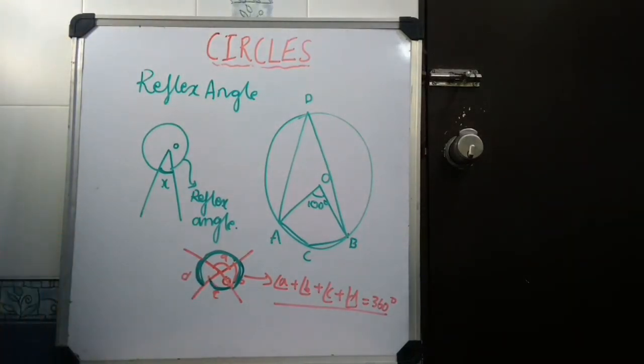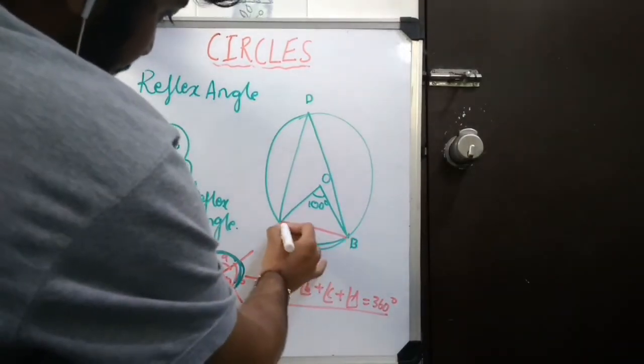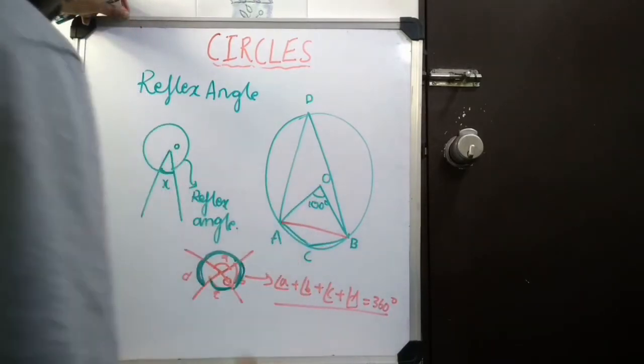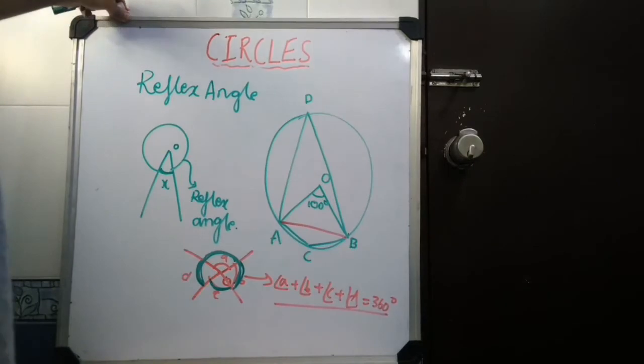So, what is its application in circles? In circles, let us say that I have an arc AB which subtends an angle at the center. That is an angle 100 degrees.